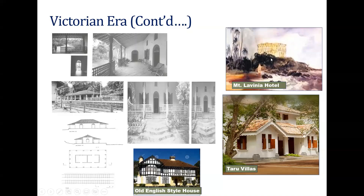The Mount Lavinia Hotel is built right onto the sea on a rock — originally the Governor's Bungalow, now converted to a hotel and one of the most famous historical hotels in Colombo. You can see Tharu Villa as well — originally an elite bungalow, now converted to a boutique hotel. There are also some large old British-type bungalows in Colombo.